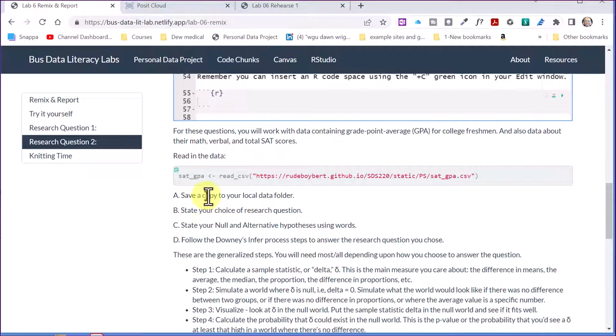And if you don't remember how to do that, you can go up here to code chunks, and there's a look at one of the code chunks. It'll show you an example of how to save to the local folder. Always got to, you know, state clearly what your research question is, the one you're choosing.